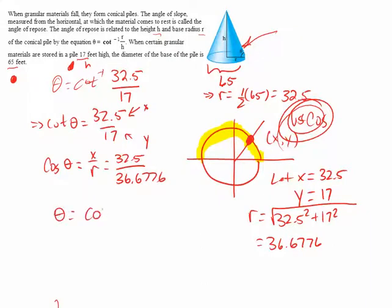So theta can be found by using the inverse cosine function, 32.5 over 36.6776, which I then go to my calculator and type that in. So do cosine inverse of 32.5 divided by 36.6776.